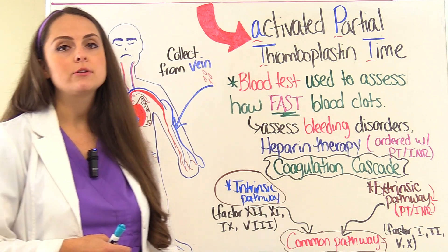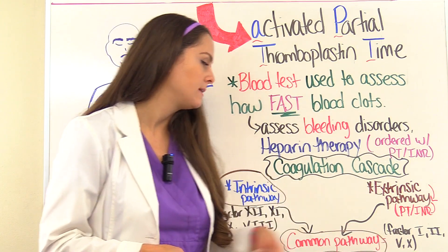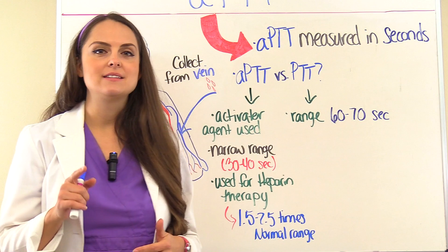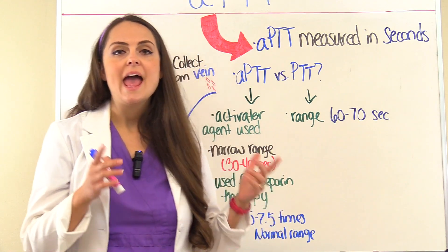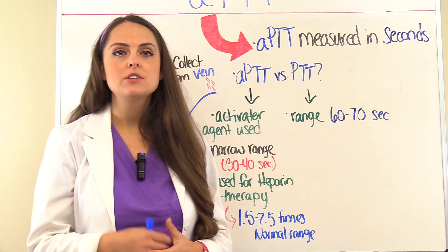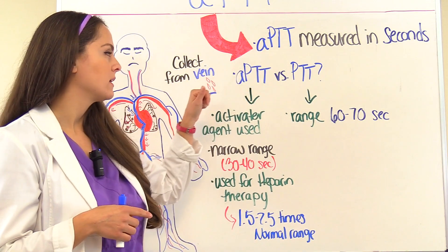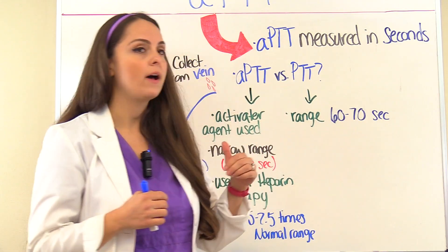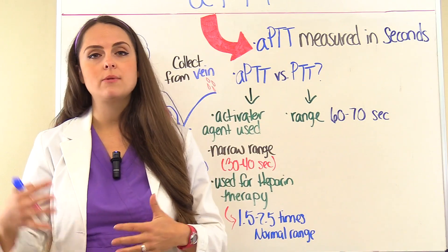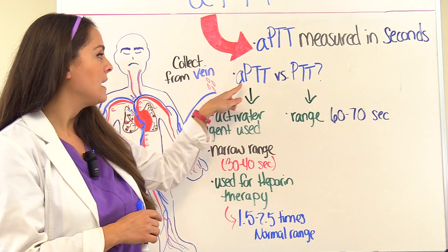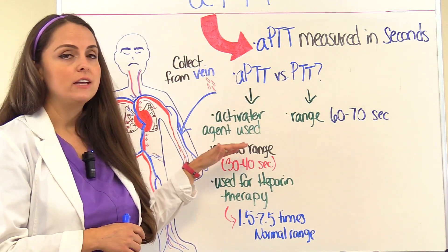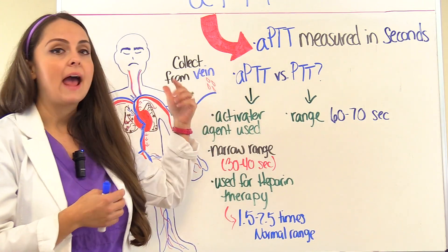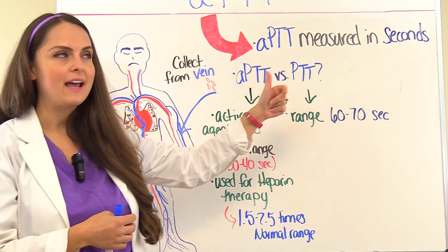The common pathway involves factors 1, 2, 5, and 10. Now, the APTT is measured in seconds. You may be wondering what's the difference between an APTT versus a PTT — well, they measure the same thing, looking at the intrinsic and common pathways. But the APTT has an activator agent used in it that helps speed up the clotting time, which is why we call it an activated partial thromboplastin time, whereas the PTT does not have that A in front of it.